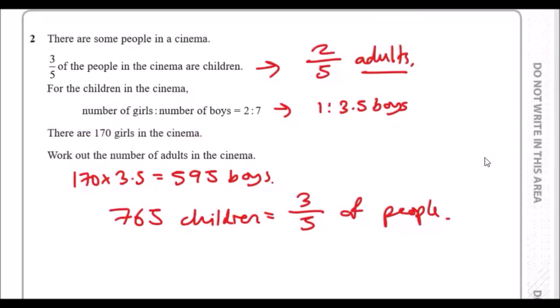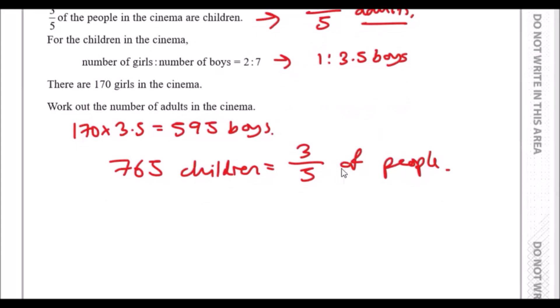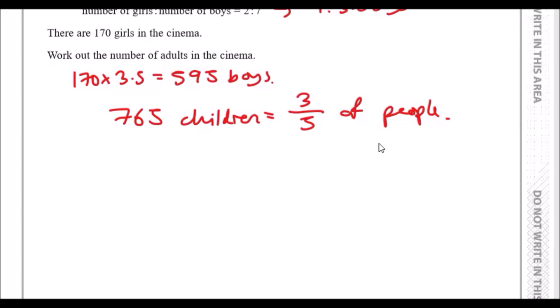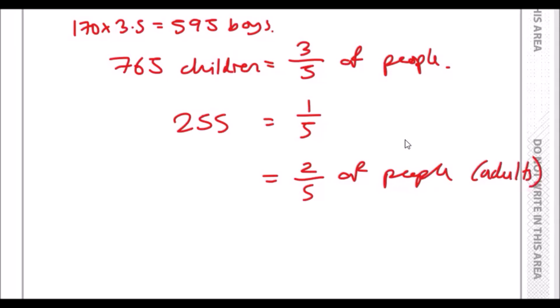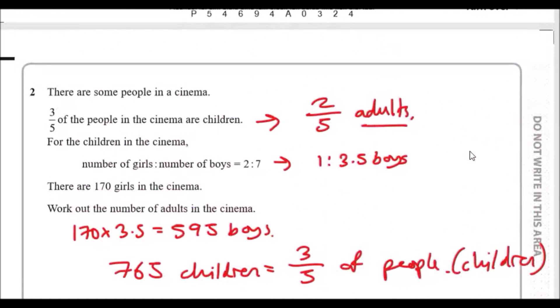We know that two-fifths of the people are adults. Since three-fifths = 765 children, one-fifth = 765 ÷ 3 = 255 people. So two-fifths = 255 × 2 = 510 adults. The answer is 510 adults in the cinema.